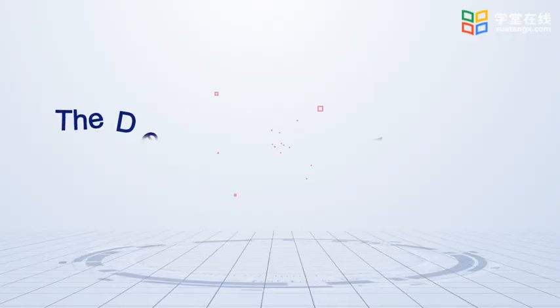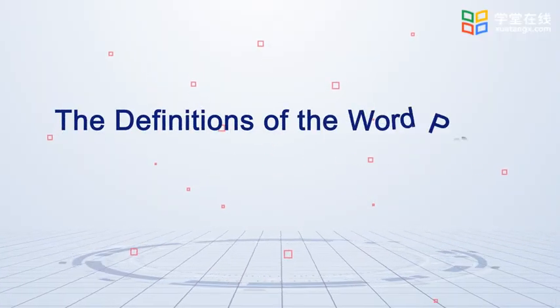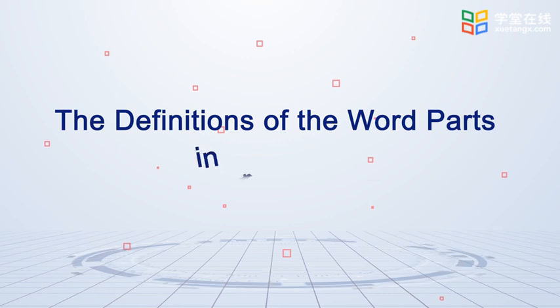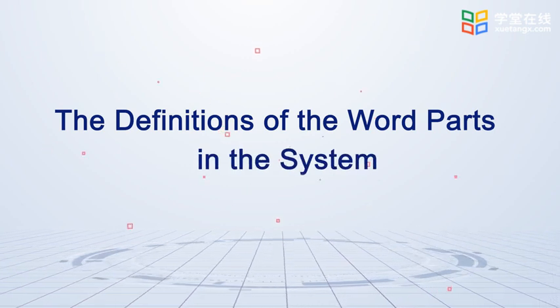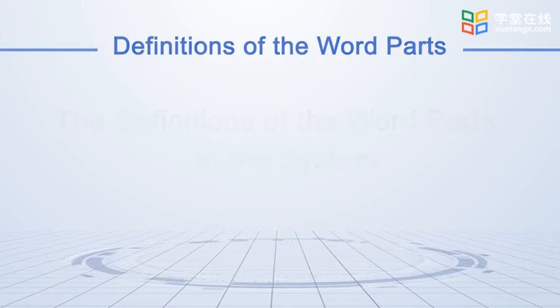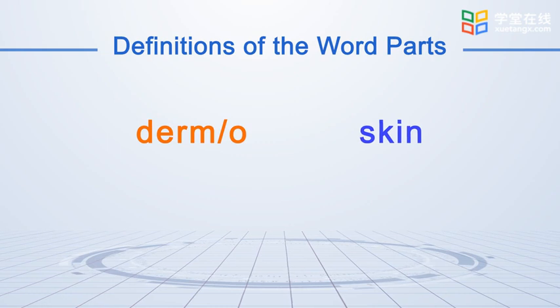That is all for the anatomical terms in the integumentary system. In this part, we are going to learn the definitions of the word parts in the integumentary system. Dermal means skin.